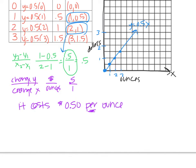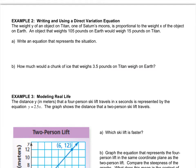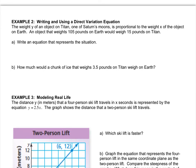Let's move on. The weight y of an object on Titan, one of Saturn's moons, is proportional to the weight x of the object on Earth. So y represents the Titan weight, and x represents the Earth weight. An object that weighs 105 pounds on Earth would weigh 15 pounds on Titan. That would be the x value, and that would be the y value. Write an equation that represents this situation.